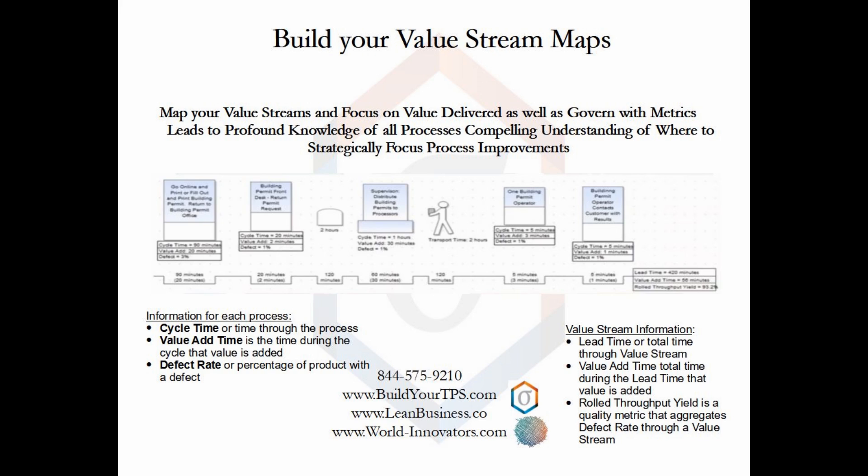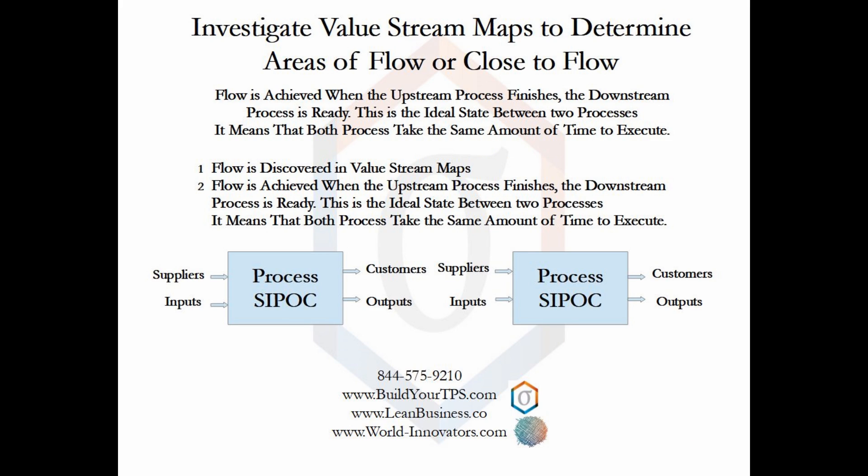I will not spend a lot of time on value streams since most manufacturers already have mapped value streams. A value stream includes every process from customer order to delivery. It cuts across departments and gives you profound knowledge of the performance of your system. It's where you start your improvement efforts, and it comes with its own set of metrics. Each process is labeled with the total time through the process, the time during the process in which value is added, and process defect rate, or the percentage of defects produced. Flow is defined such that just as the previous process completes, the following process becomes ready for its input. A value stream map gives you information about the time through each process. Finding flow becomes easy with a value stream map.